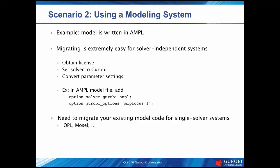Scenario two covers modeling systems. For example, you may have a model written in AMPL. The key distinction is whether your modeling system is solver independent. If it is, switching is extremely easy — once you've obtained a Gurobi license, all you need to do is set the solver option to Gurobi and convert your parameter settings through your system's IDE, the command line, or by modifying a script file. Here's a simple example of how to do this in AMPL with just two lines: the first changes the solver to Gurobi using the gurobi_ampl option, and the second gives a list of Gurobi parameters — in this case, MIPFocus equals one to have the solver focus on finding good feasible solutions.